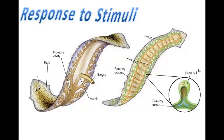In most flatworms, the nervous system consists of two nerve cords with connecting nerve tissue that runs the length of the body. Along the length of the body, we see these two nerve cords and the connections in between — kind of like a ladder running the course of the body.